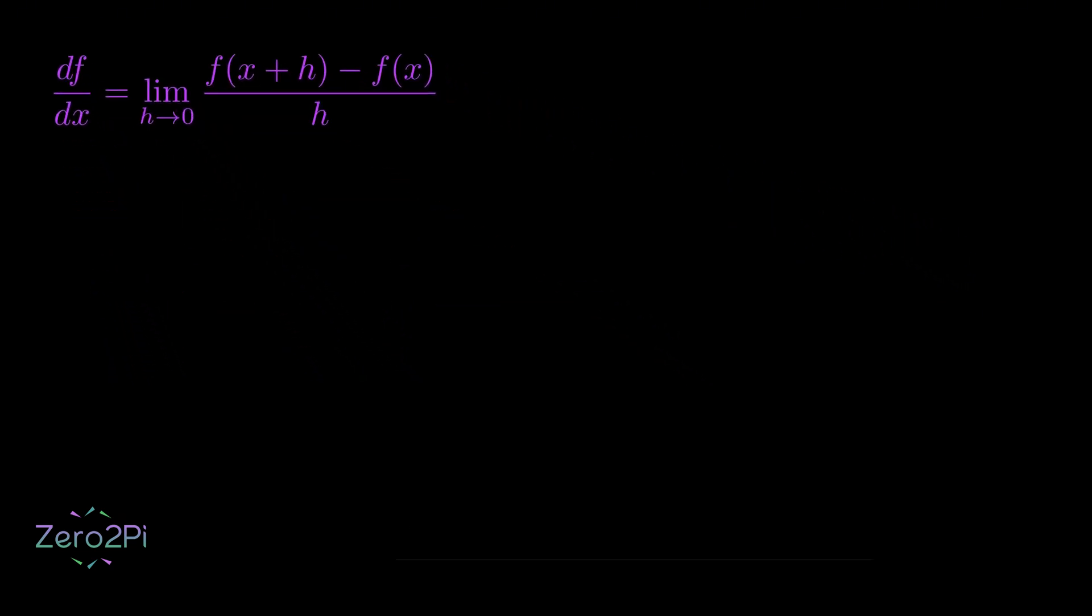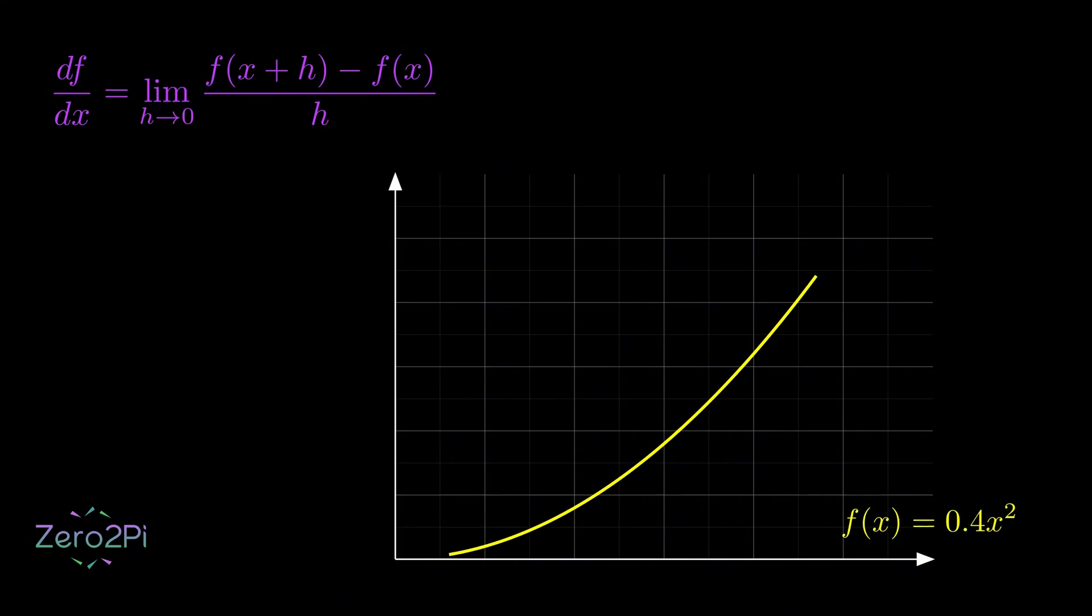If we plot a graph of x squared to understand its rate of change at a specific point, we pick two points. Let's call them a and b. The line connecting them is called a secant line.